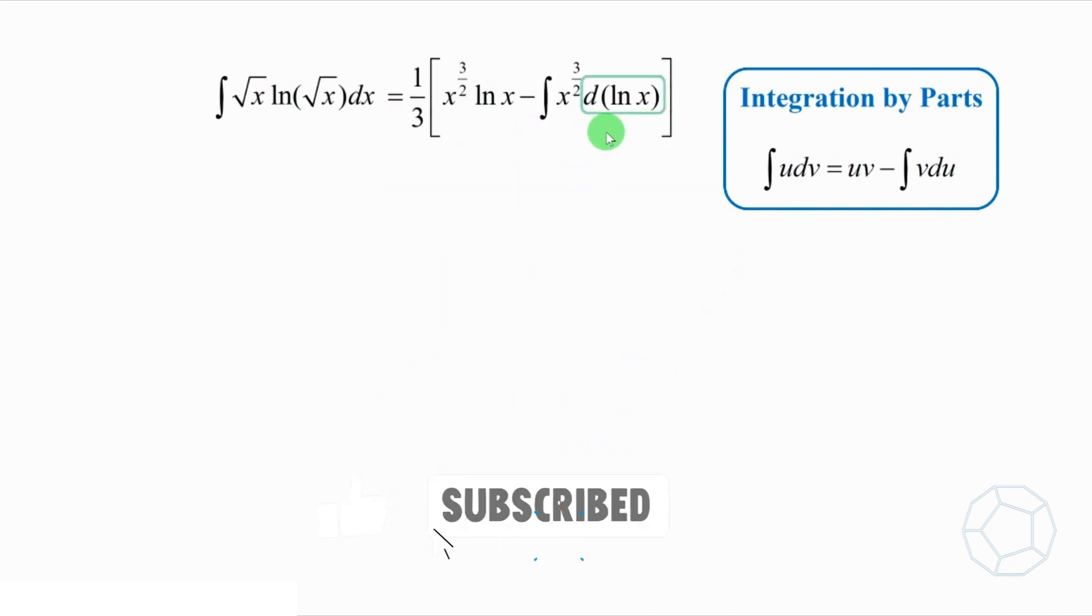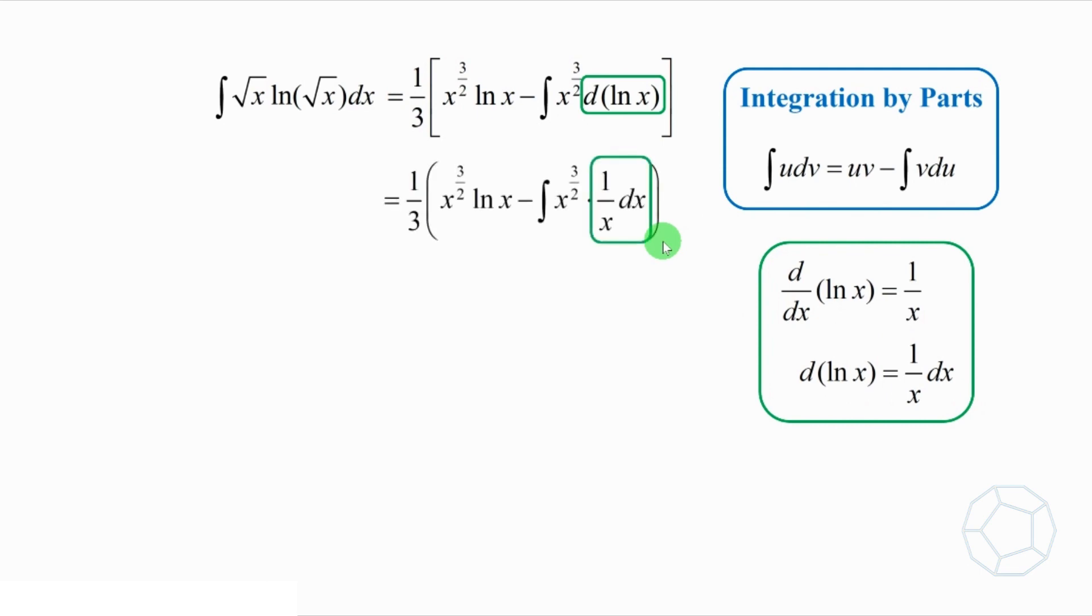Let's focus on the differential. Because d log x dx is equal to 1 over x, so d bracket log x is equal to 1 over x dx. We put this result into the integral. Therefore, it becomes integrate x to the power of 3 over 2 times 1 over x dx.